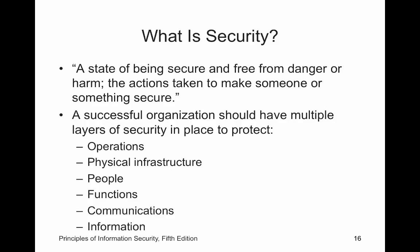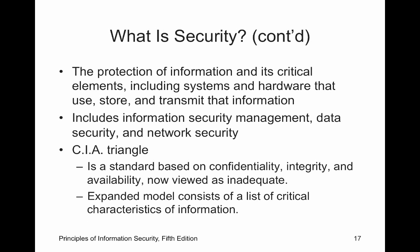Different layers of security: operational security, physical infrastructure, our people, our functions, our communications, our information. How many people do you know that use computers but don't really know what they're doing? The protection of information is critical. At a school, we have grades — that's very important. They start talking about the CIA triangle: confidentiality, integrity, and availability. We will talk about each one — it is covered in virtually every class, so you do need to know it.